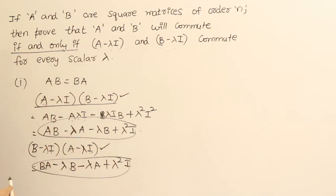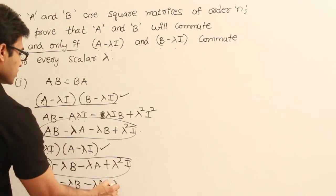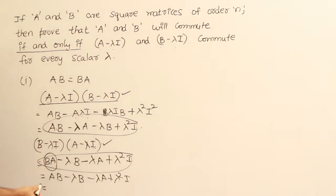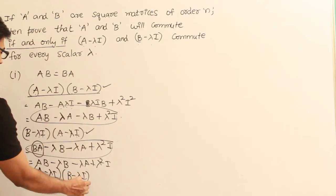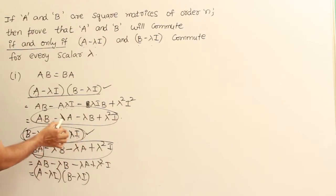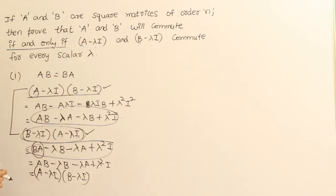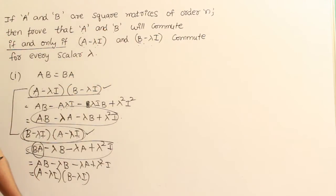We already know that AB equals BA. So if I substitute AB in place of BA in the second result, I get AB minus lambda A minus lambda B plus lambda squared I — which is exactly the same as the result from the first multiplication, A minus lambda I into B minus lambda I. Therefore both products are equal, which means A minus lambda I and B minus lambda I commute. That is step number one.